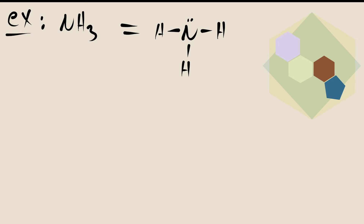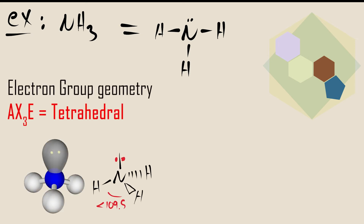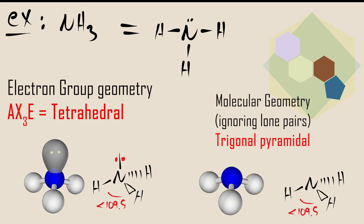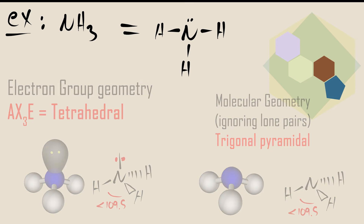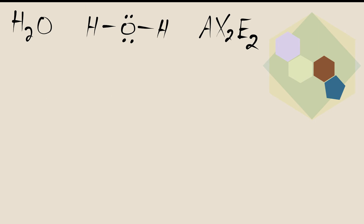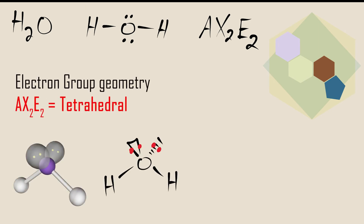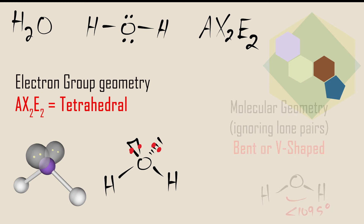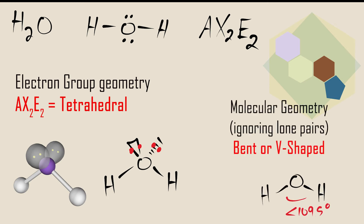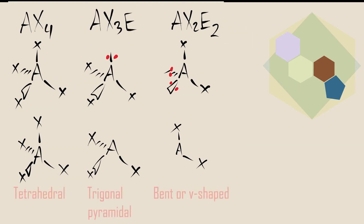When one of the four electron groups in a tetrahedral arrangement is a lone pair, the molecular shape is that of a trigonal pyramid. When the four electron groups around the central atom include two bonding and two non-bonding groups, the molecular shape is bent or V-shaped. The following summarizes the molecular shapes associated with central atoms surrounded by four electron groups.